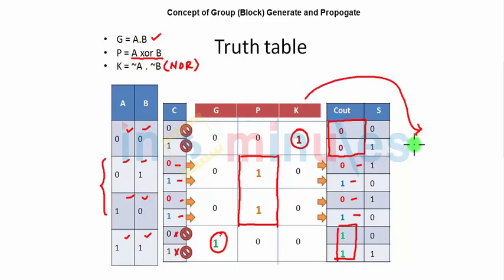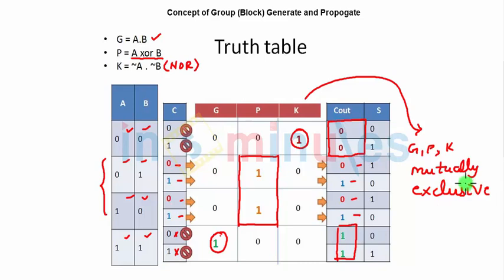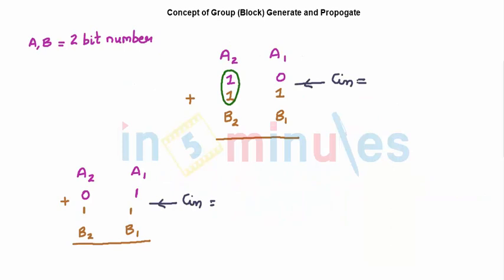For bitwise generate, propagate, and kill signals, all three are mutually exclusive — only one can be high at any point in time. Now we extend this concept to group-wise or block-wise addition, because in practice we deal with multiple bits and need to predict carry across a group of bits.